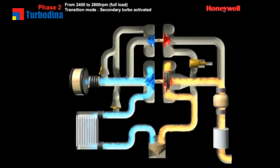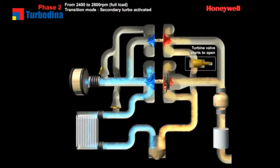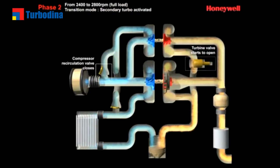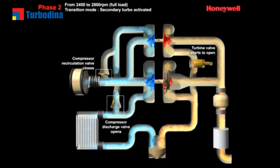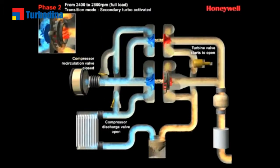But when the engine reaches a defined load, the valve starts to open, allowing the flow of gas to activate the secondary turbo, which works in parallel at higher speeds to provide the best-in-class peak power.